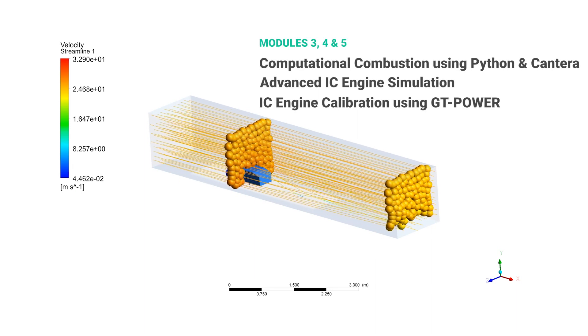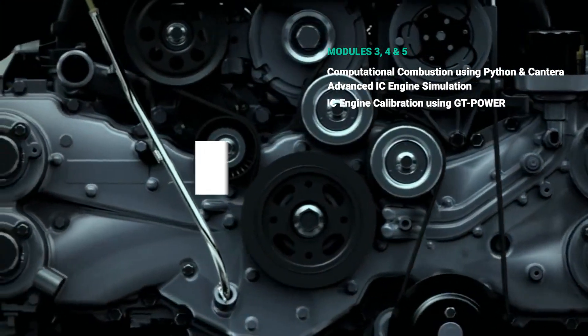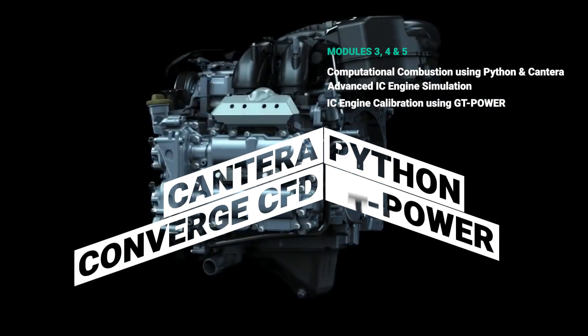In Modules 3, 4 and 5, you will understand the effects of fuel to air mixtures and internal combustion engine calibration techniques using Python, Cantera, Converse CFD and GT Power.